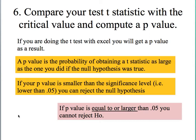With your t-statistic, you can compute a p-value. Excel, for example, will give you a p-value instead of a t-value in your test. The p-value is the probability of obtaining a t-statistic as large as the one you did if the null hypothesis was true. If your p-value is smaller than the significance level, you can reject the null hypothesis.